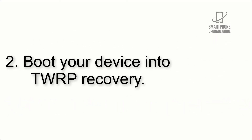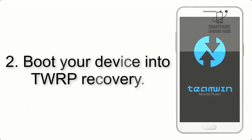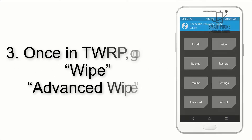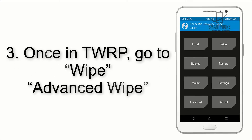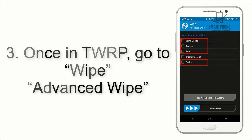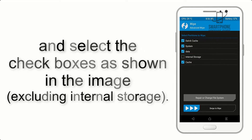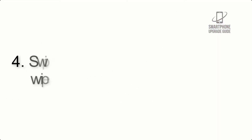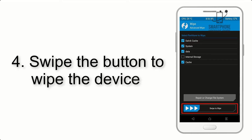Step 2: Boot your device into TWRP recovery. Once in TWRP, click on Wipe, then Advanced Wipe, and select the checkboxes as shown in the image, excluding internal storage. Step 4: Swipe the button to wipe the device.